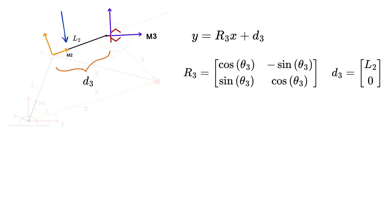Since link 2 lies along the x-axis of frame M2, the translation happens only in the x direction by a distance of L2, and there is no movement in the y direction.